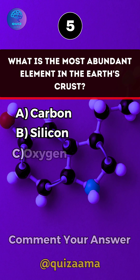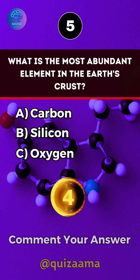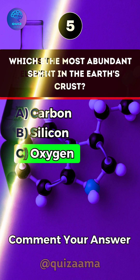What is the most abundant element in the Earth's crust? Answer C: Oxygen.